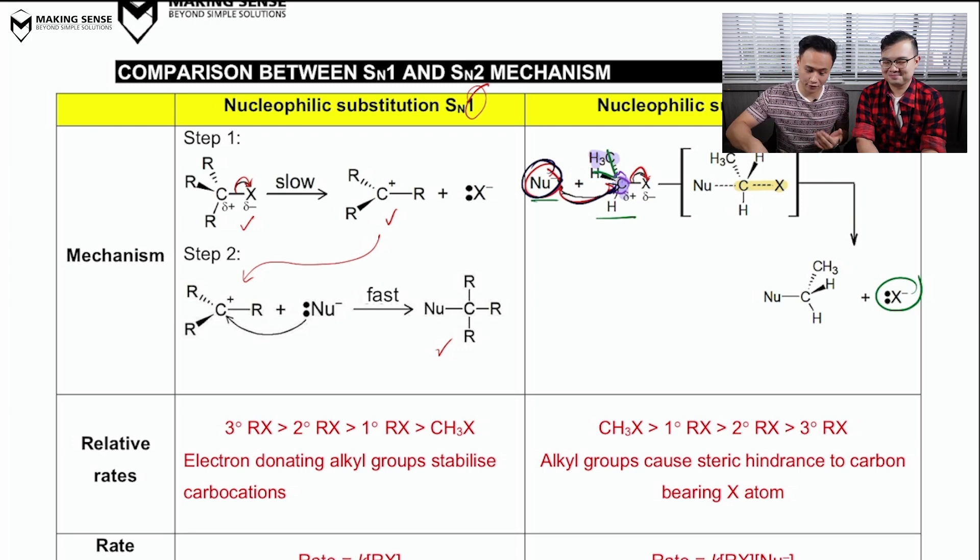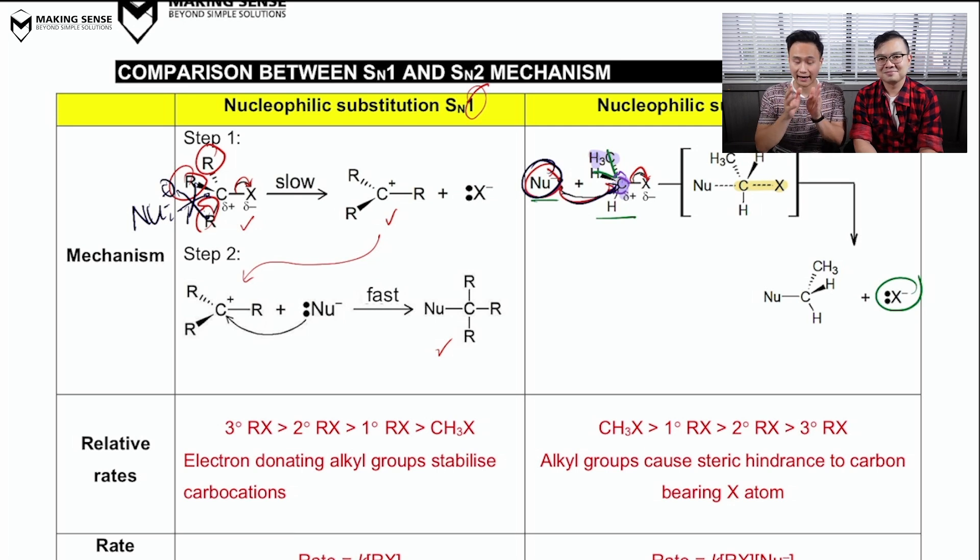but if the carbon is sterically hindered, and if you have big fat alkyl groups blocking that carbon, then it's very difficult for the nucleophile to come in now and attack. So this is exactly when no more backside attack happens,